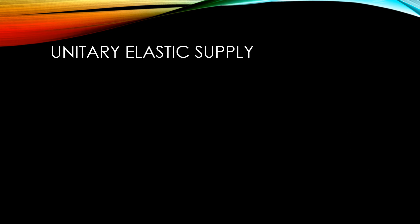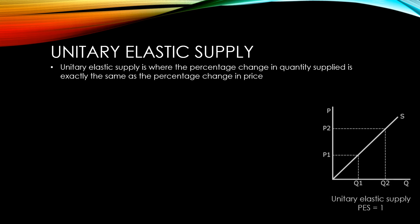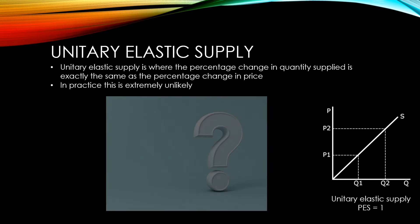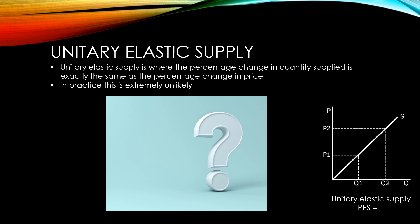Unitary elastic supply is where the percentage change in quantity supplied is exactly the same as the percentage change in price. In practice, this is very unlikely to occur.